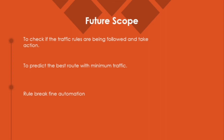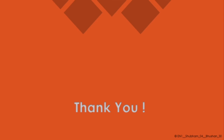Another future enhancement is to predict the best route with minimum traffic. Using website data we can determine the amount of traffic around a particular area and predict the best route from one point to another with minimum traffic. One more thing that can be added in the future is to impose fines on those people who break traffic laws. That is all we have regarding our density based traffic control system. Thank you so much for watching, and if you have any queries please feel free to contact us.